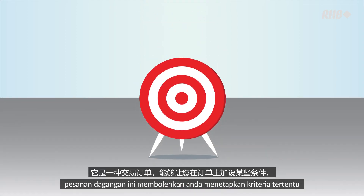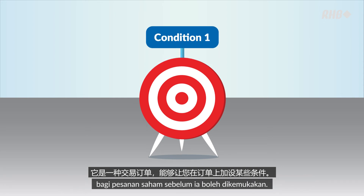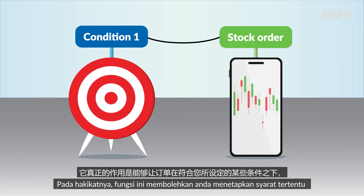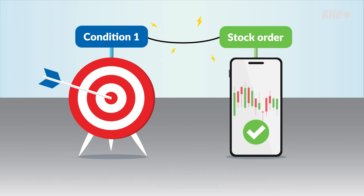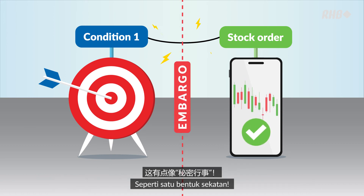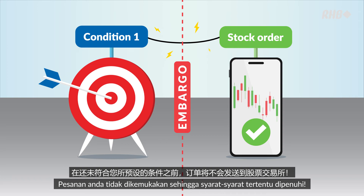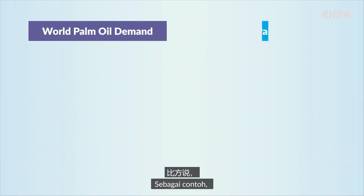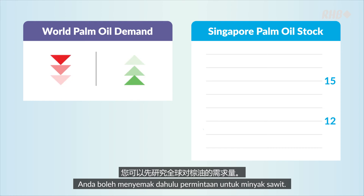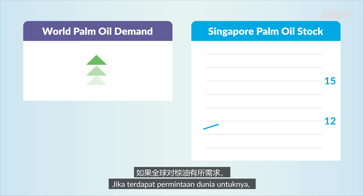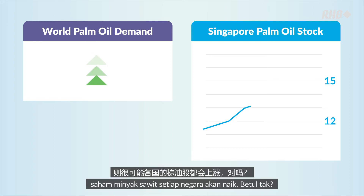Our third feature is Conditional Order. Like the rest, it's a type of trade order that allows you to attach certain criteria to a stock order before it can be submitted. It allows you to place certain conditions before your order is submitted to the relevant stock exchange — kind of like an embargo. Your order doesn't move until your preset conditions are met.